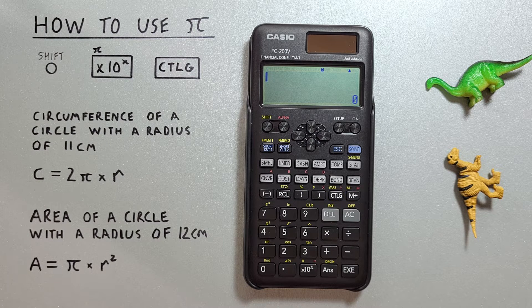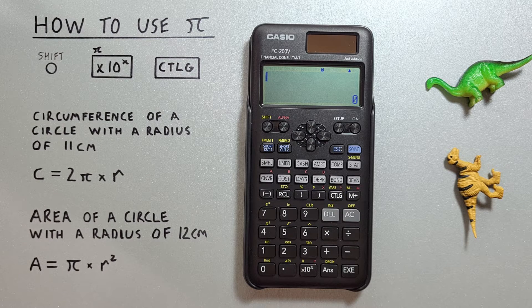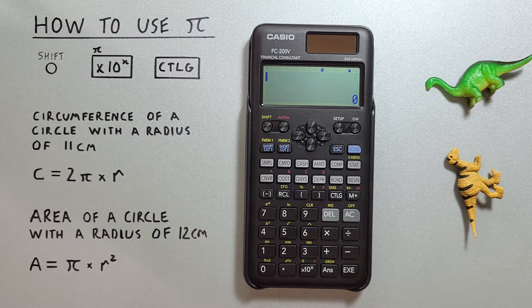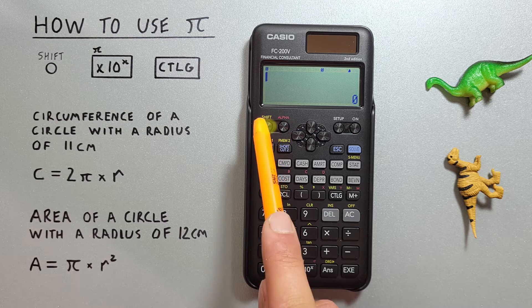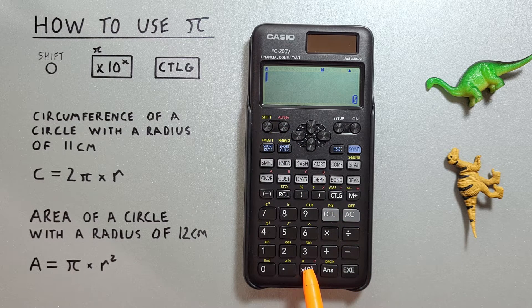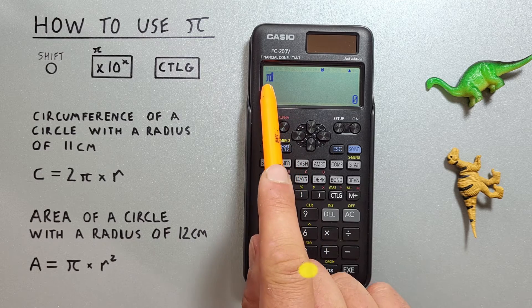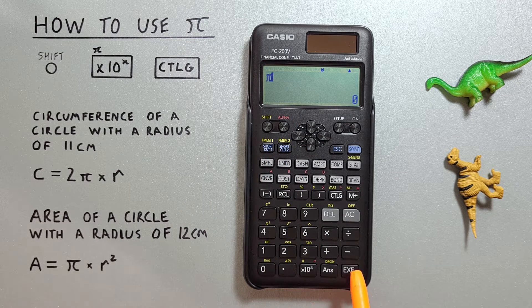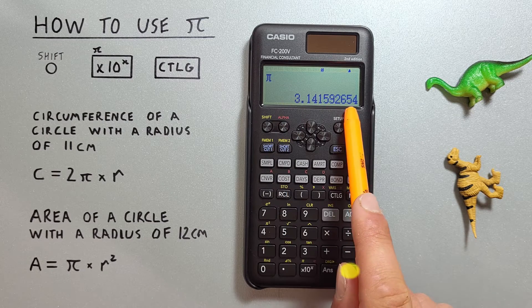If we want to get Pi on our screen we have two options on this calculator. First, we can use the keypad by pressing shift times 10 to the x with the shift function of Pi. And we get Pi on our screen. And if we hit exe, we can see the full number there.